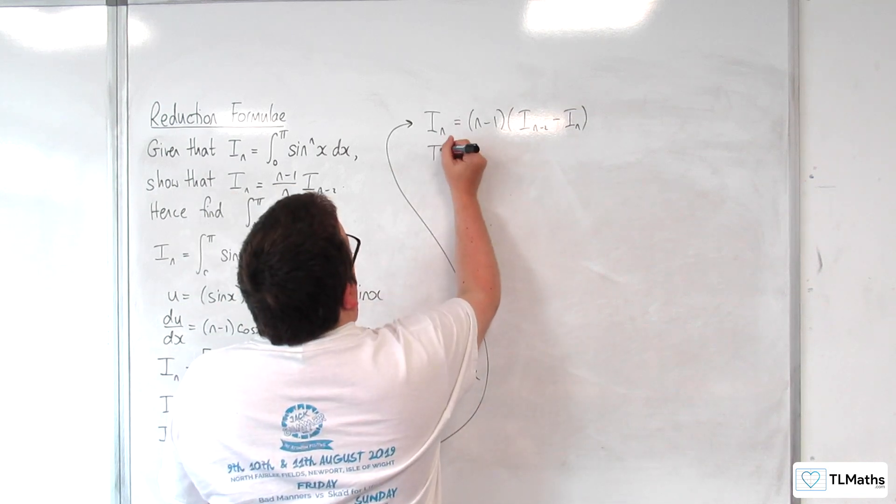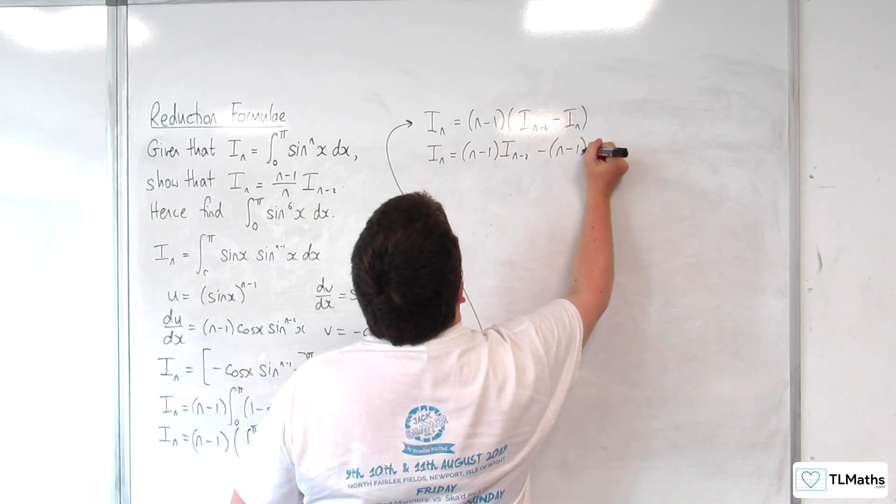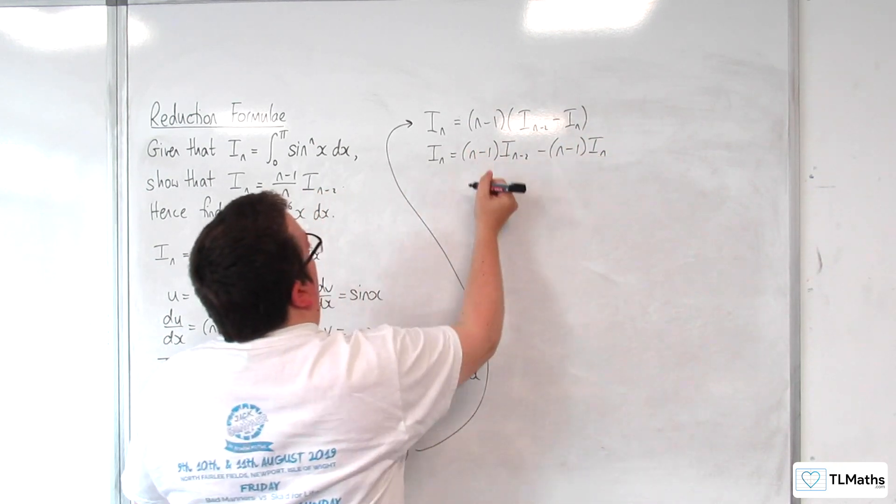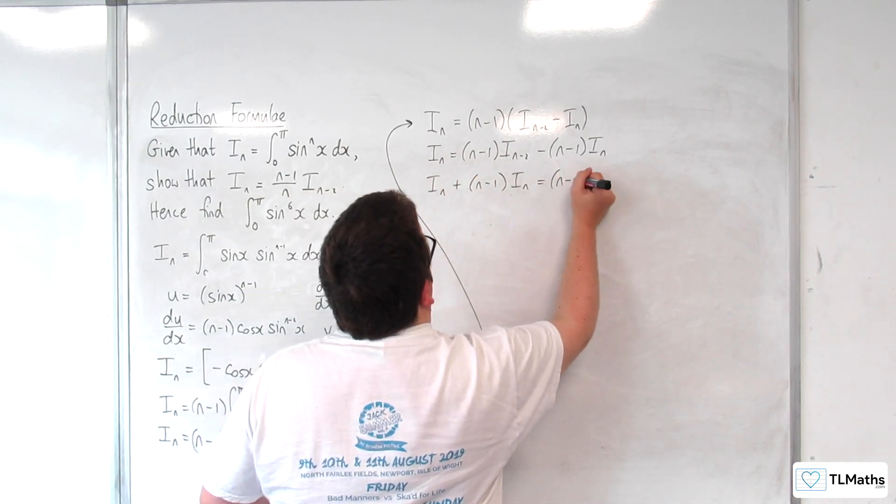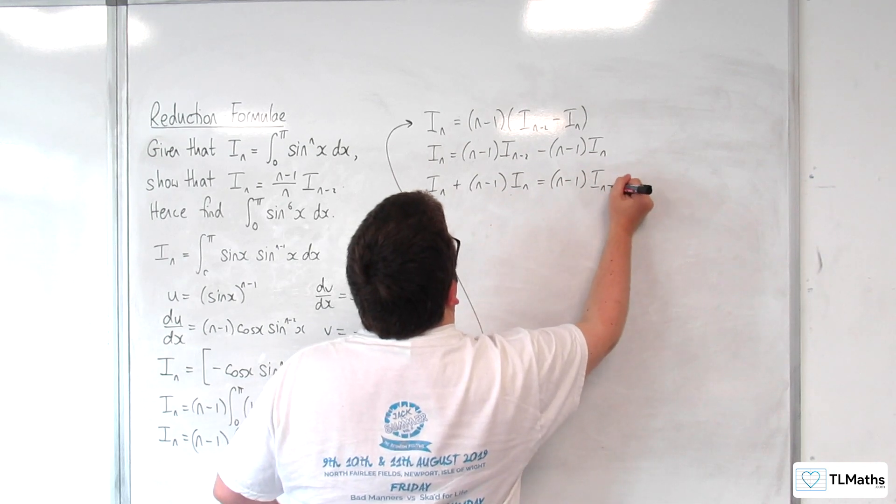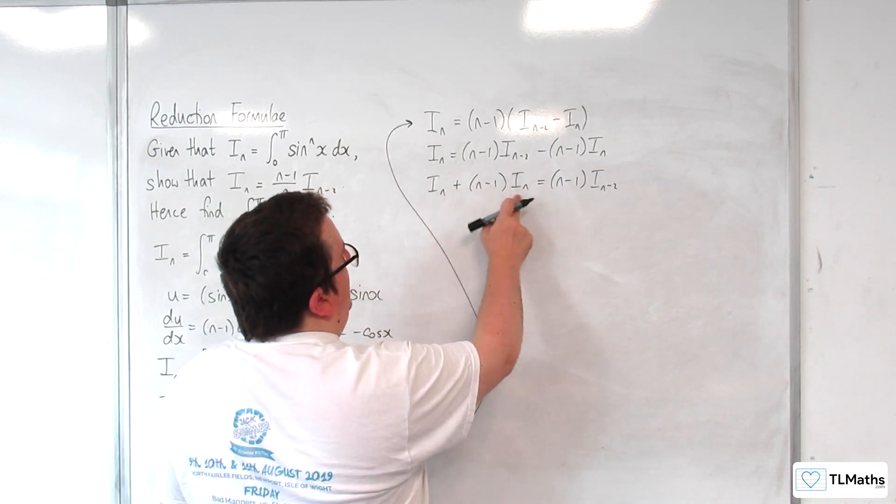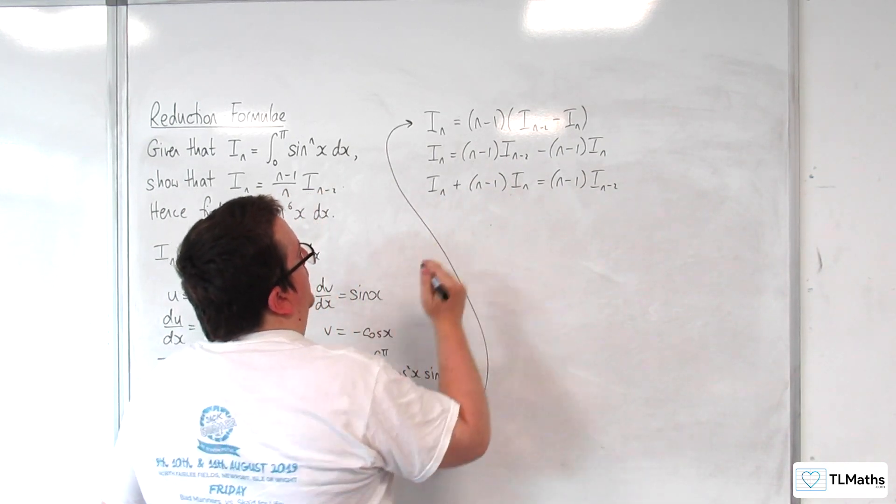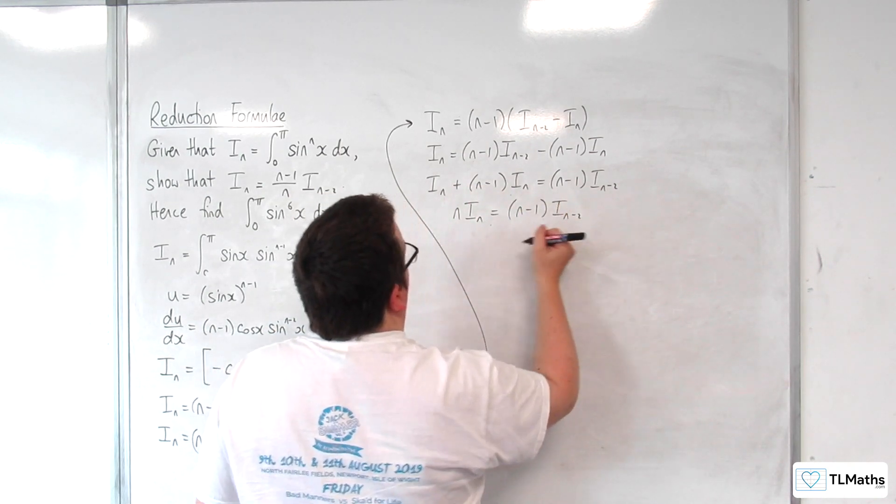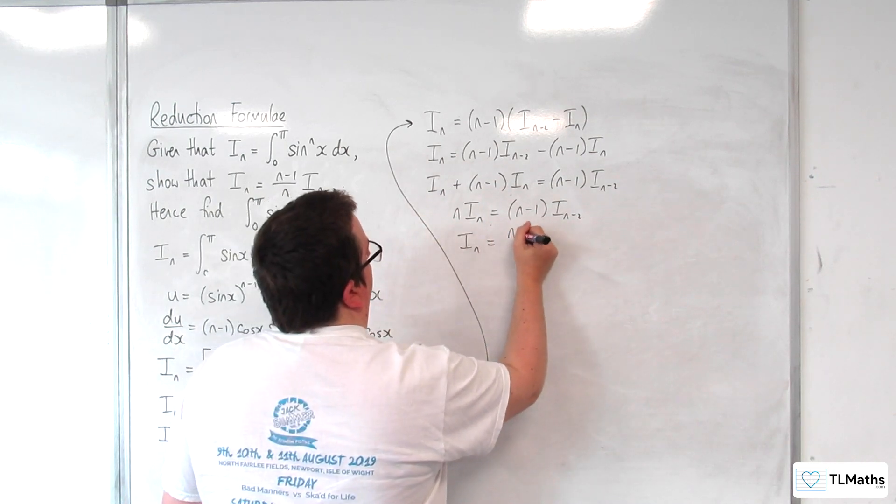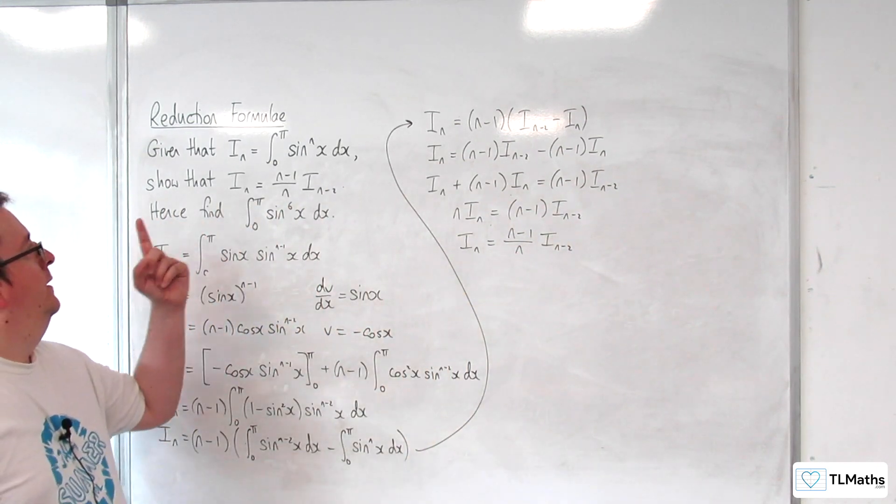So I'm going to multiply that out and move that over to the other side. On the left-hand side, I've got I_n plus n lots of I_n take away I_n, so I've just got n·I_n on the left-hand side. Divide through by n, and I have the reduction formula that I wanted.